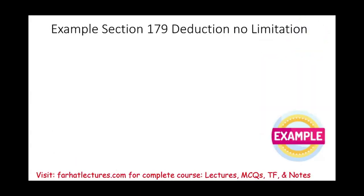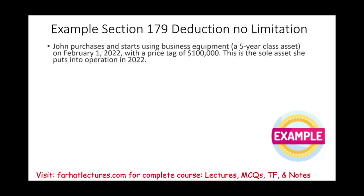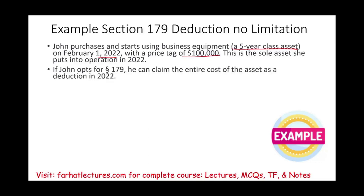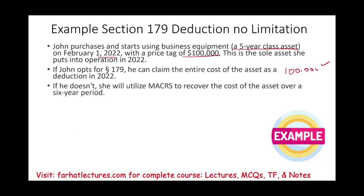Let's look at a simple example with no limitation to illustrate the benefit of Section 179. Assume John purchases and starts using business equipment — a five-year class asset — on February 1st, 2022. John paid $100,000, and this is the only asset he purchased in 2022. Assuming no limitation, John can elect to take the full $100,000 as a Section 179 deduction — a 100% immediate deduction. Alternatively, John doesn't have to do that; he can depreciate the asset using MACRS and recover his cost over the next six years.